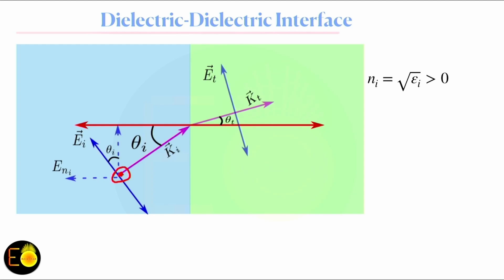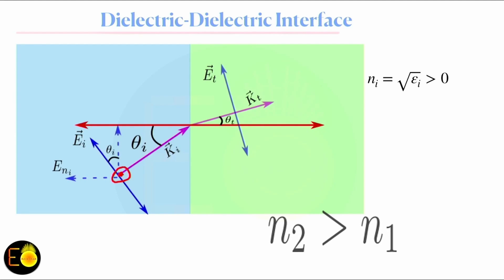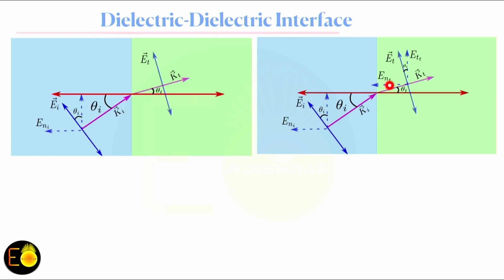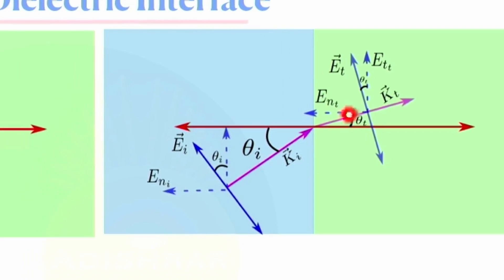Since the electric field is not parallel to the interface, it has two components: one normal to the interface and one parallel. If the incident angle is theta_i, this same angle appears in the geometry. When the incident wave is transmitted into the second medium — where N2 is greater than N1 — the wave shifts towards the surface normal as per Snell's law. The transmitted wave vector is Kt, making angle theta_t with the surface normal, and similarly has two electric field components.